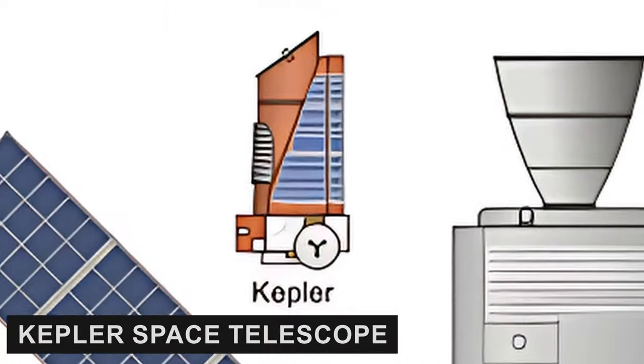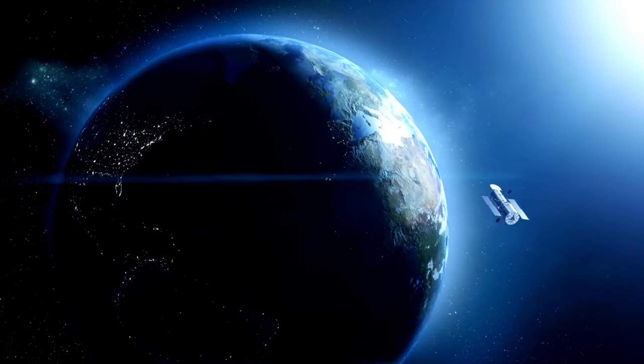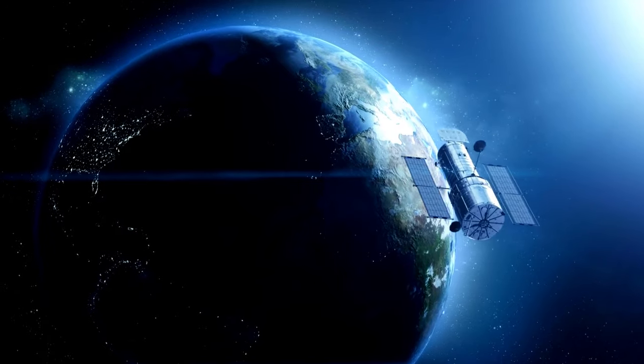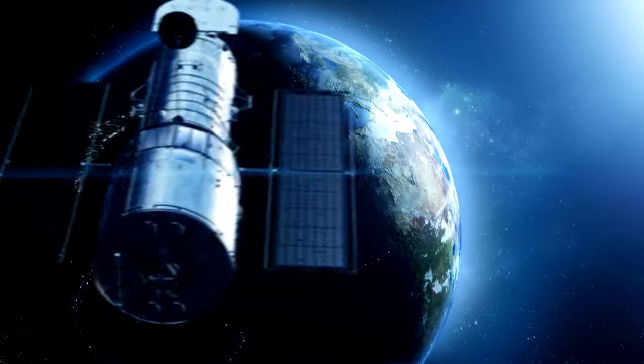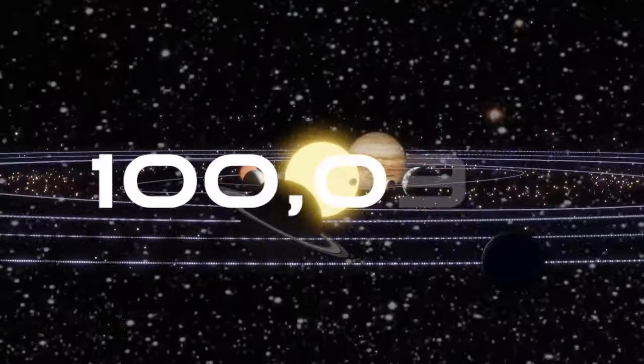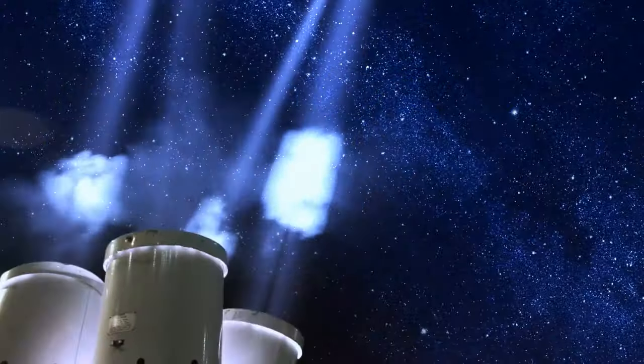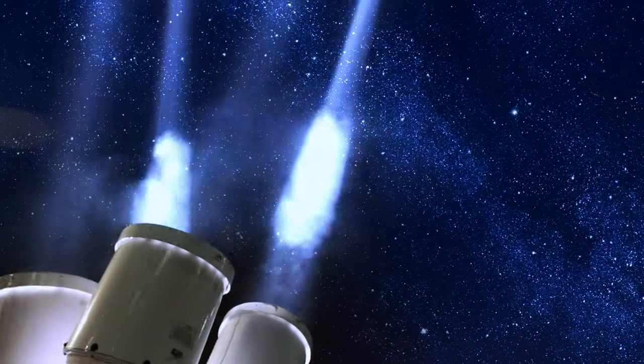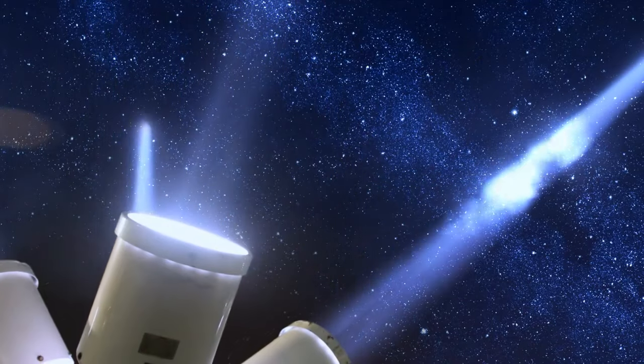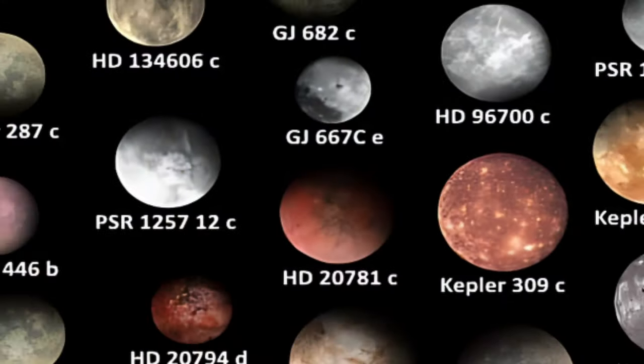The Kepler Space Telescope takes us on another journey. But this time, it's a planet-hunting expedition. Kepler keeps a vigilant watch on over 100,000 stars simultaneously, using sensitive visible light photometers to detect the subtle changes in starlight. Its mission is to discover exoplanets.